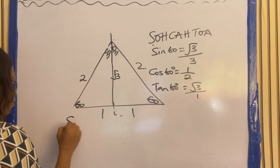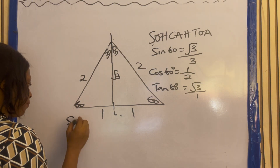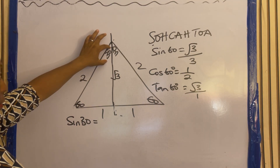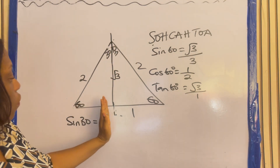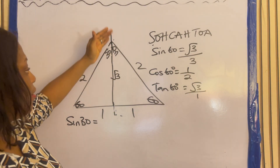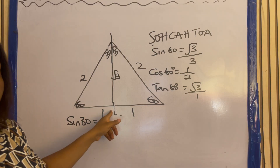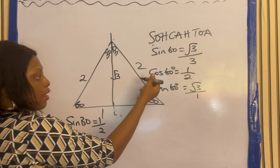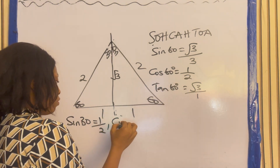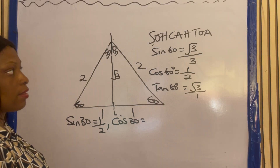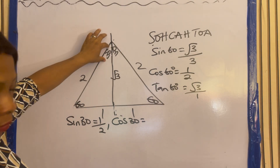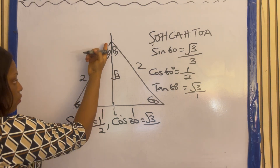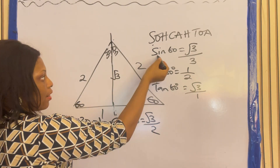Now let's look at sin 30. Sin is opposite over hypotenuse. Looking at 30° here, the place where the angle is lying is the adjacent, and the hypotenuse is the longest side. Therefore the remaining side is the opposite. So opposite is 1 over hypotenuse 2. So sin 30 is 1 over 2. Then cos 30 — cosine is adjacent over hypotenuse. Looking at 30°, the adjacent is root 3 over hypotenuse 2. So cos 30 is root 3 over 2, the same as sin 60.